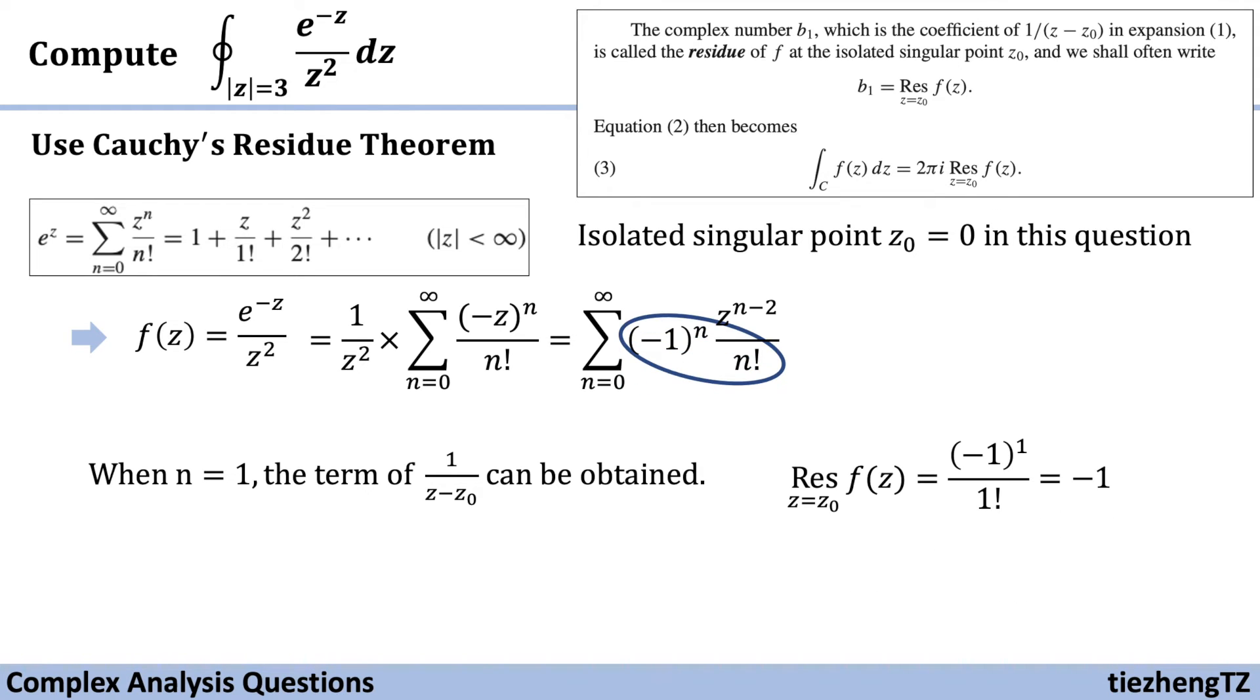The corresponding coefficient, which is the residue of f(z) at the isolated singular point z₀, is (-1)^1/1! = -1.